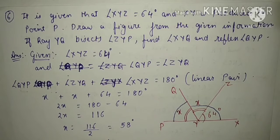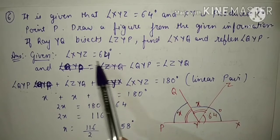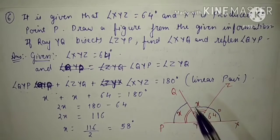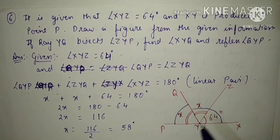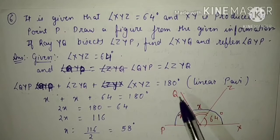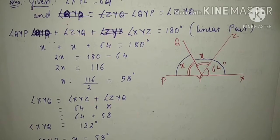So let's start the answer. First, write what is given to us: angle XYZ is equals to 64 degrees — this is given. And one more thing is given: angle QYP is equals to angle ZYQ. This is also given to us; they both are equal.